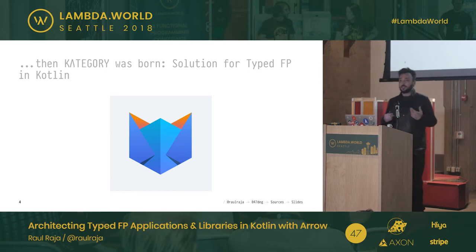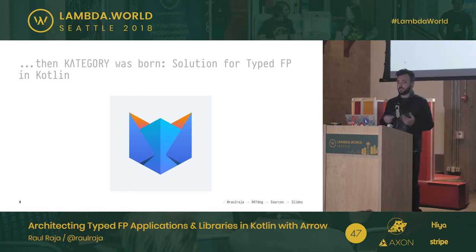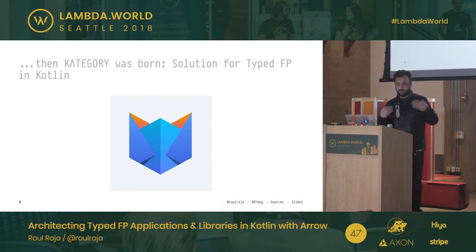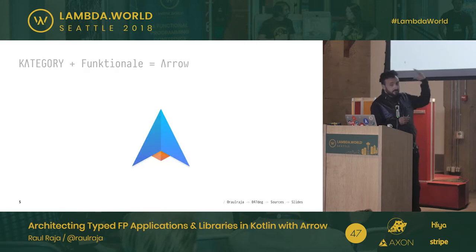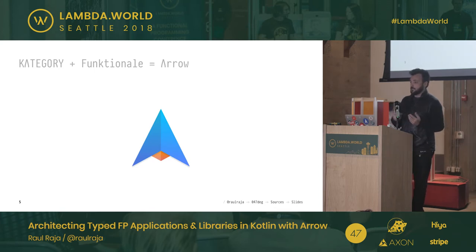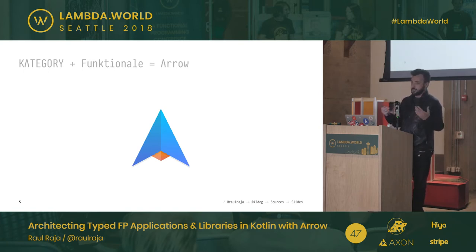I personally didn't want the Kotlin community to have the same division we had in Scala, where the functional programming community split into ScalaZ and Cats. So when we had Kategory — the previous name — we decided to fuse with Funktionale, the other functional programming library at the time. We talked to Mario, who was maintaining it, and he agreed the best outcome for the Kotlin community was to join forces and create a single solution including core type classes, data types, recursion schemes, optics, and more.